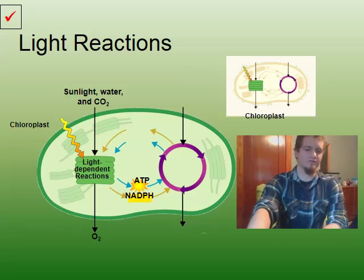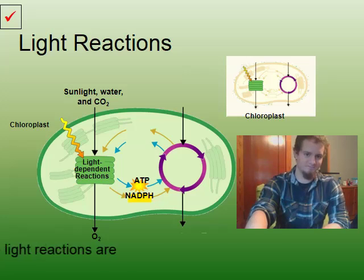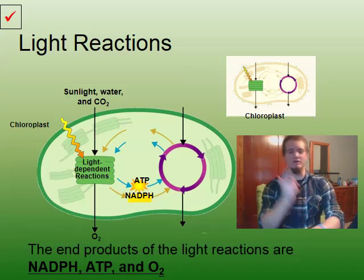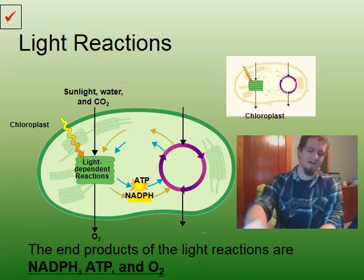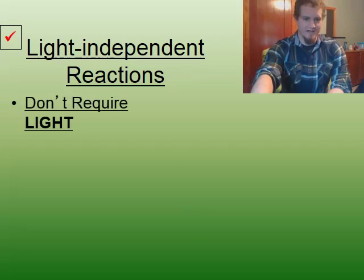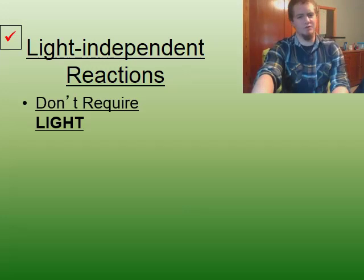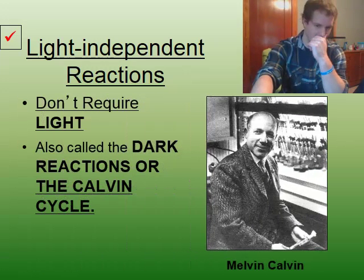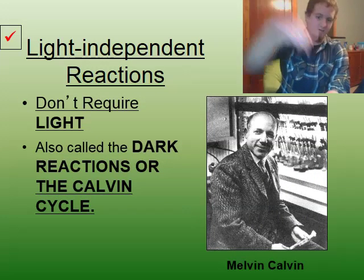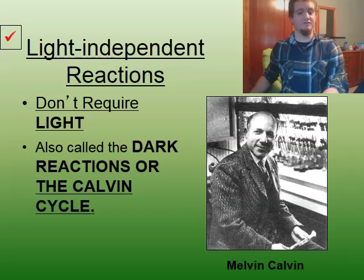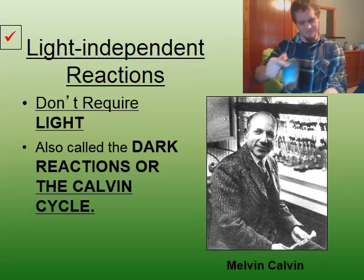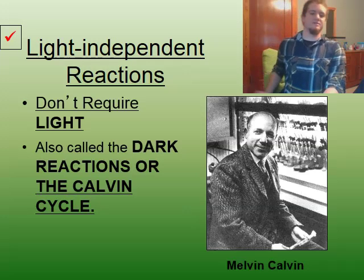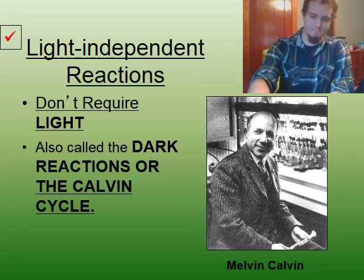Our next step is the light-independent or dark reactions. The end products of the light reactions — NADPH, ATP, both of which are used up in the next set, and oxygen — feed into this stage. The light-independent reactions don't require light to occur. They're also called the dark reactions or the Calvin cycle, named after Melvin Calvin.